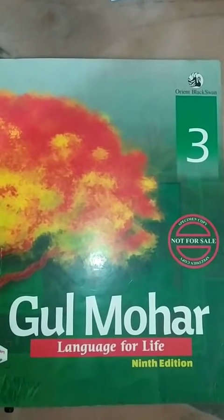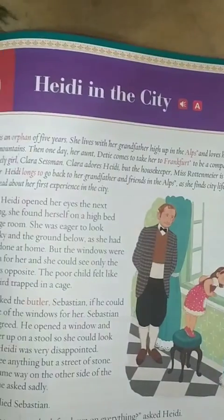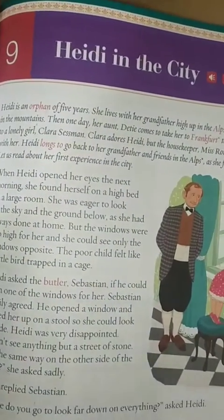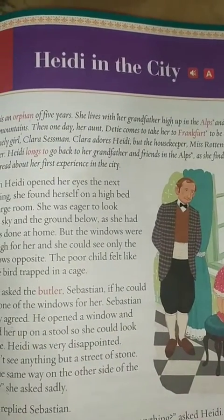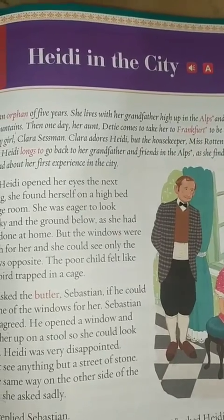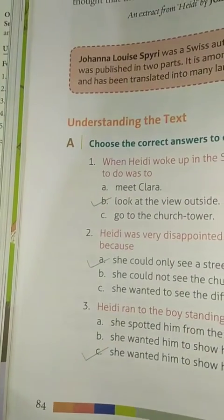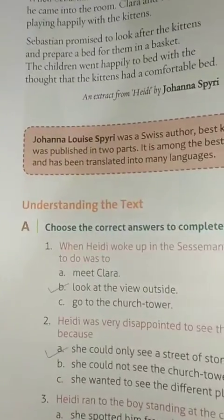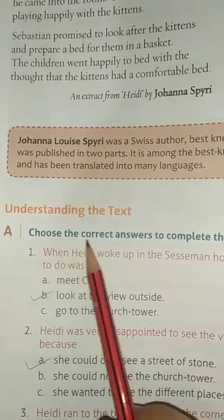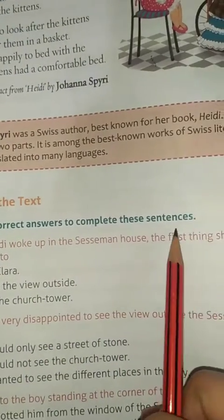Good morning students. Welcome to online class for class third, subject English. Open your book to chapter number nine: Heidi in the City. In the last video I already explained this chapter. So in this video, we will fill the exercise portion. Turn the page and open page number 84, Understanding the Text. Choose the correct answer to complete these sentences.